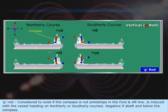G-Rod: Considered to exist if the compass is not amidships in the fore and aft line. It is induced with the vessel heading on northerly or southerly courses. Negative if abaft and below the compass.